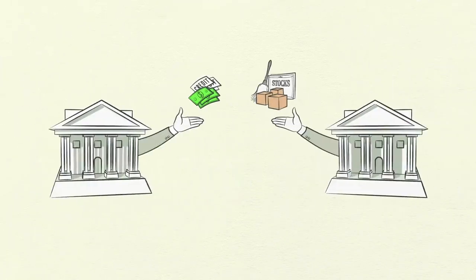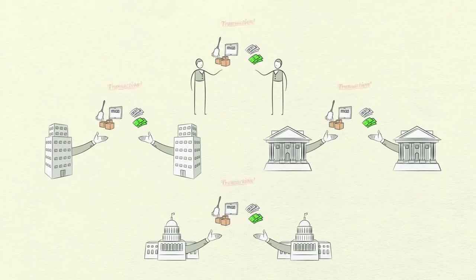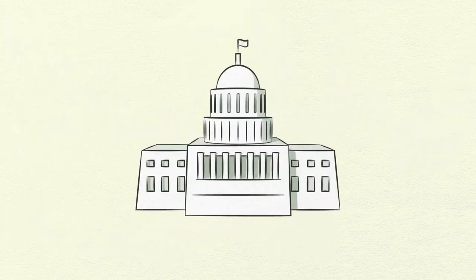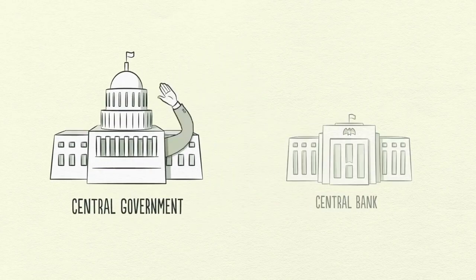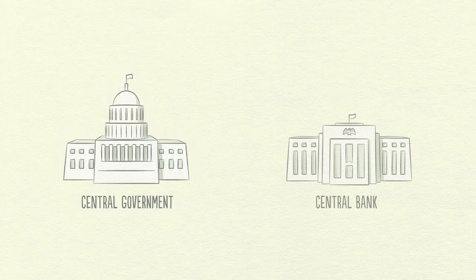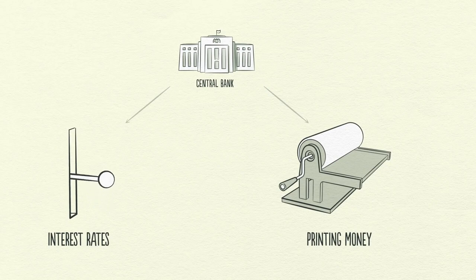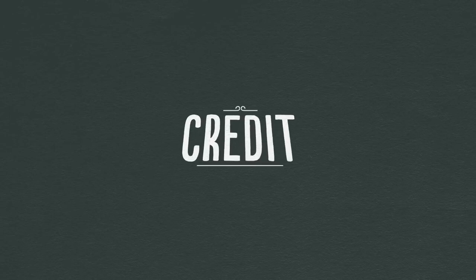People, businesses, banks, and governments all engage in transactions, exchanging money and credit for goods, services, and financial assets. The biggest buyer and seller is the government, which consists of two important parts: a central government that collects taxes and spends money, and a central bank, which is different from other buyers and sellers because it controls the amount of money and credit in the economy. It does this by influencing interest rates and printing new money, making the central bank an important player in the flow of credit.